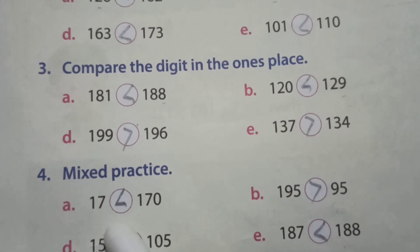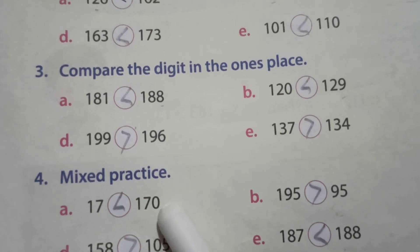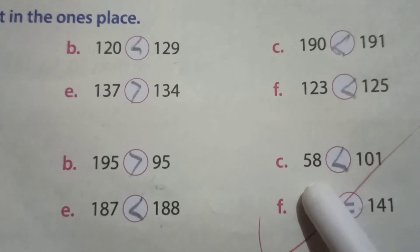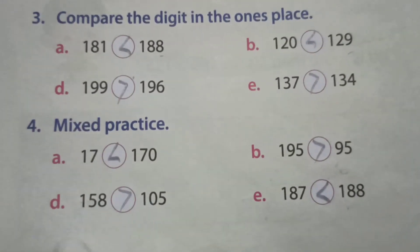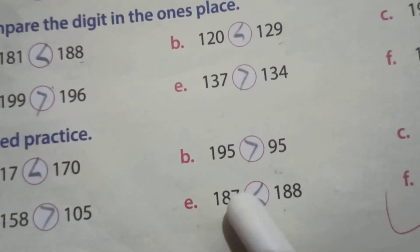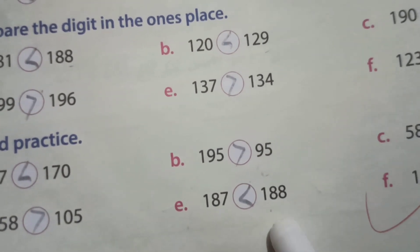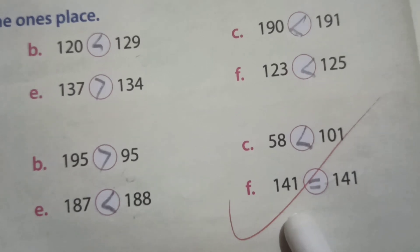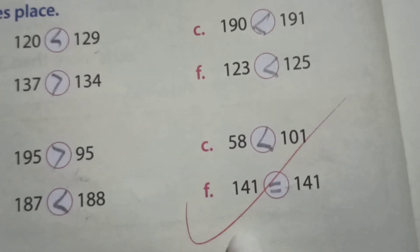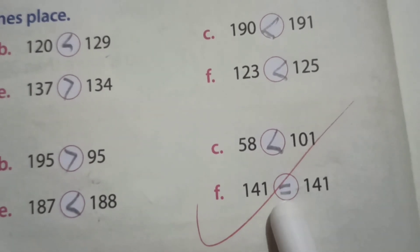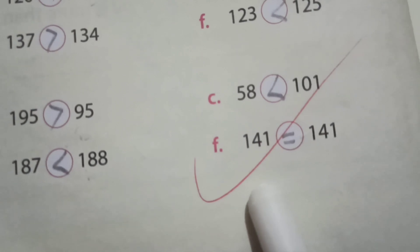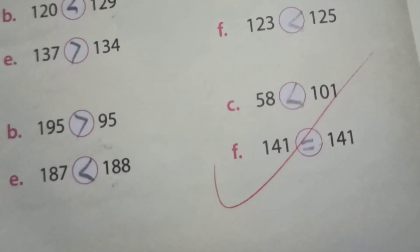Question 4: A — 17 is less than 107. 70. 195 is greater than 95. 58 is less than 101. Next, D — 158 is greater than 105. 187 is less than 188. 141 is equal to 141 — both side numbers are equal, so we use the equal sign here. That type — two small parallel lines — equal sign, all of you know equal sign.